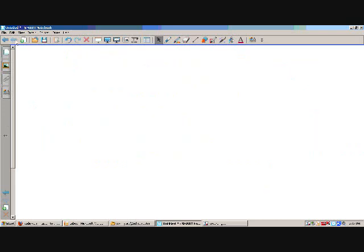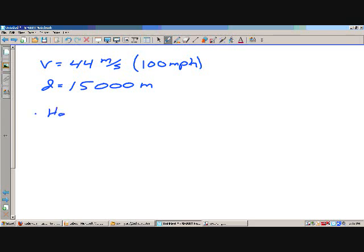Let's look at an example, starting off kind of simple. Let's say the velocity is 44 meters per second, about 100 miles an hour. And let's say we want to go some distance, 15,000 meters. The first question might be, how long for the observer? How long would observer measure?